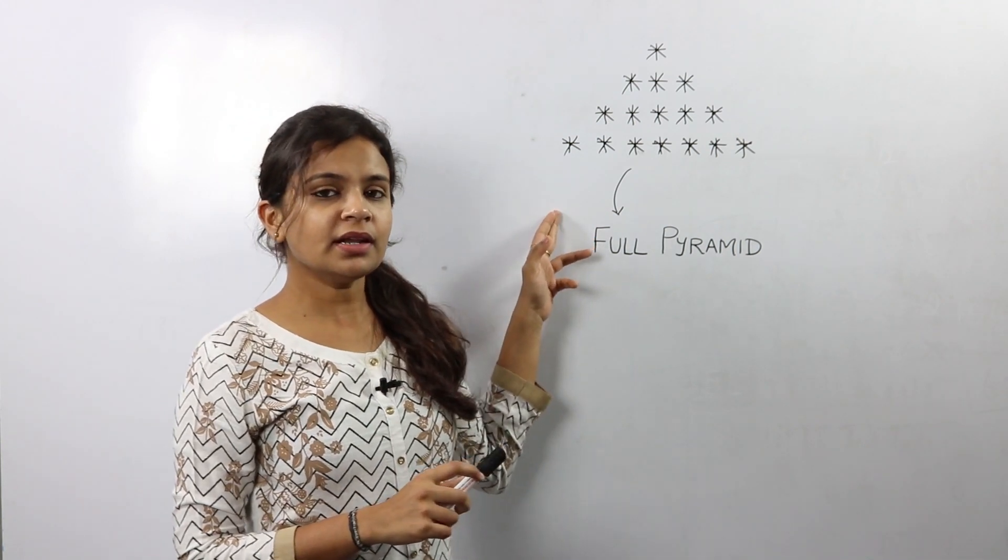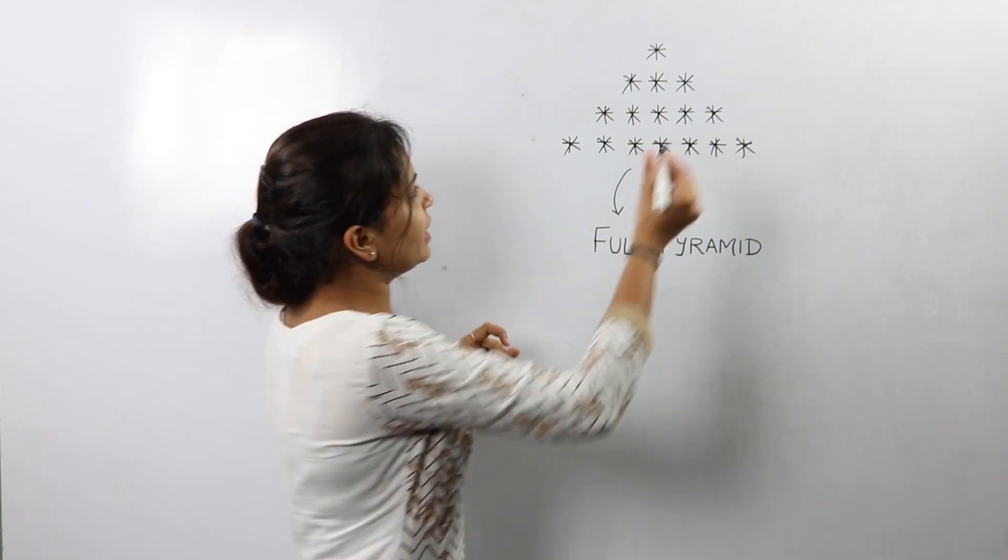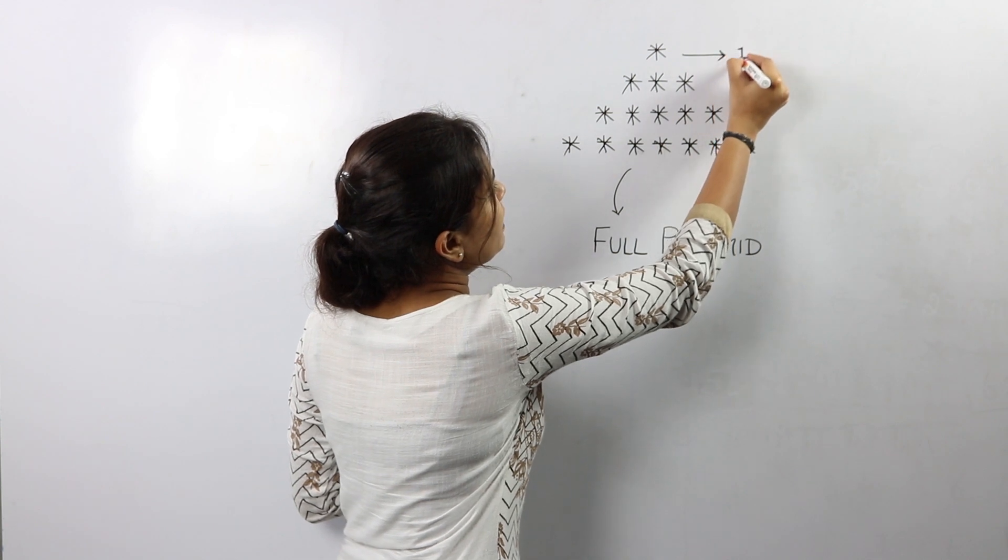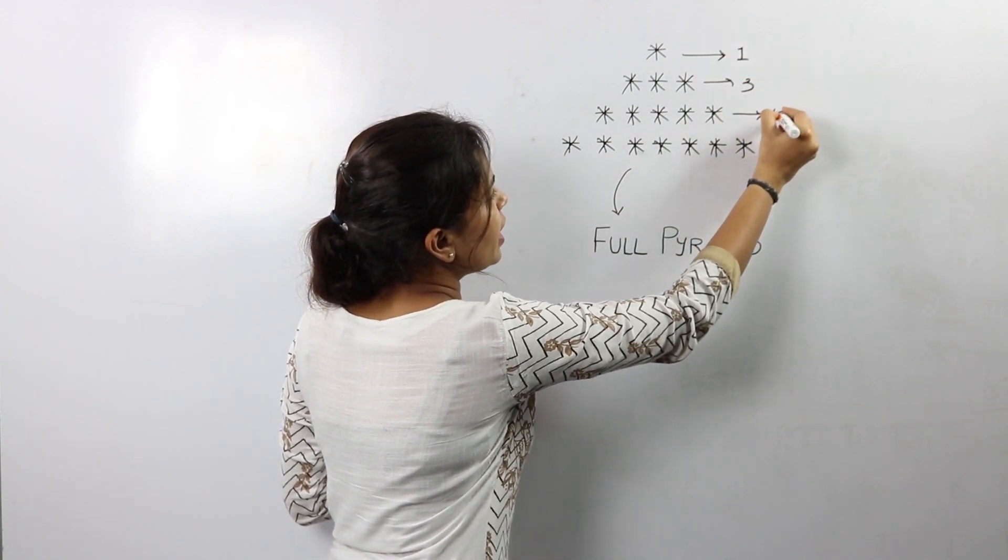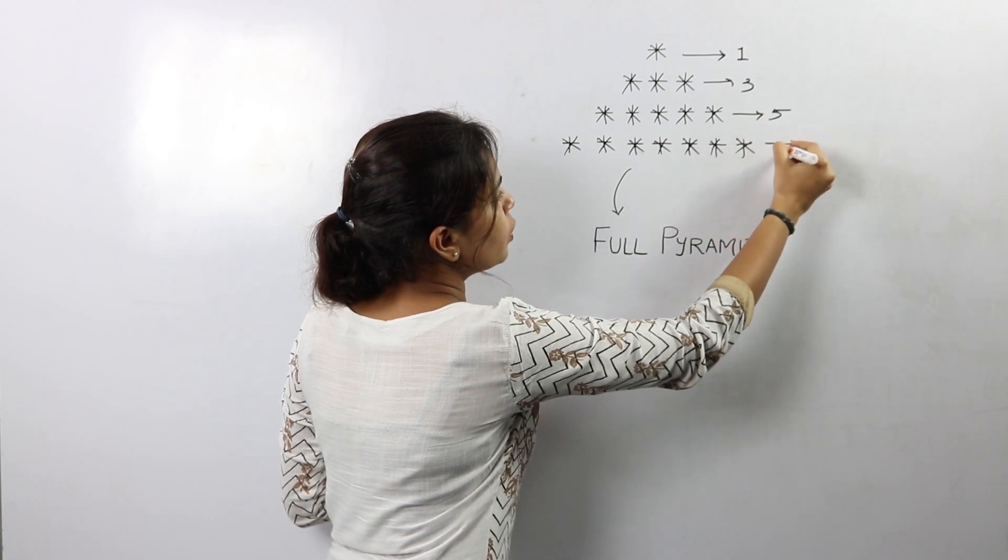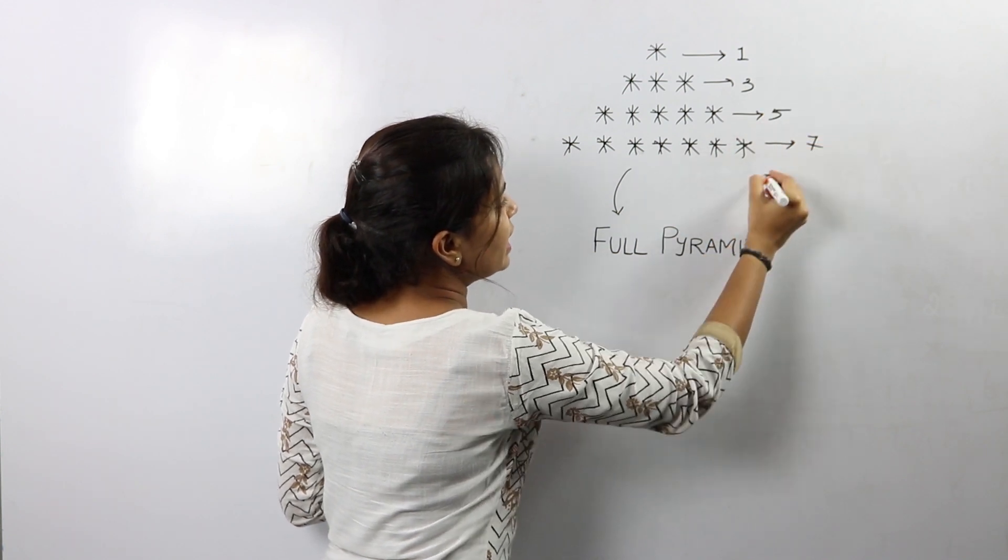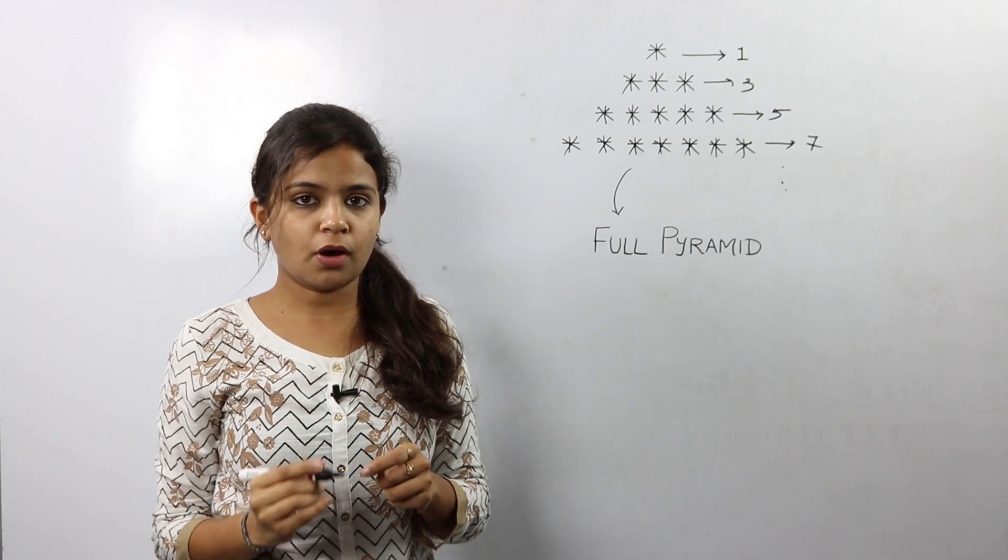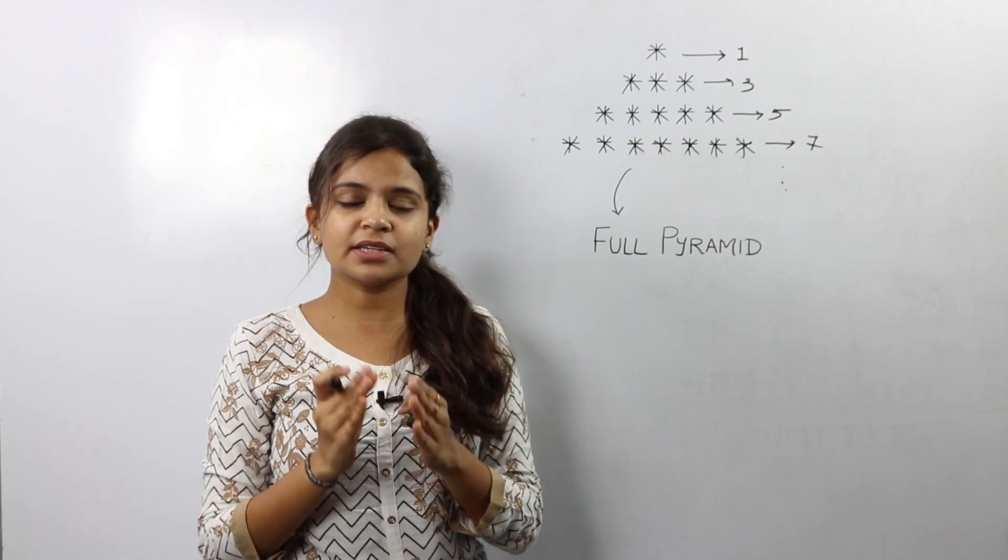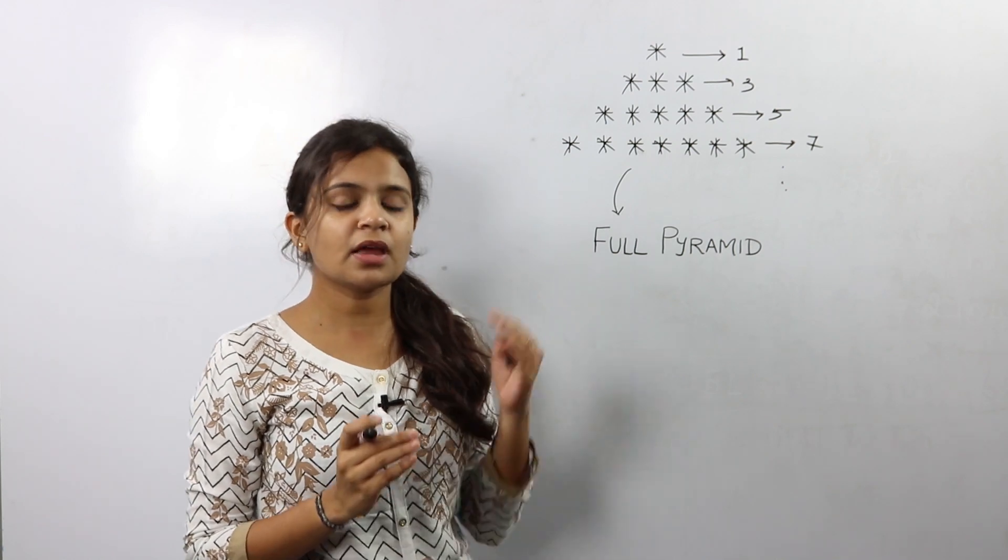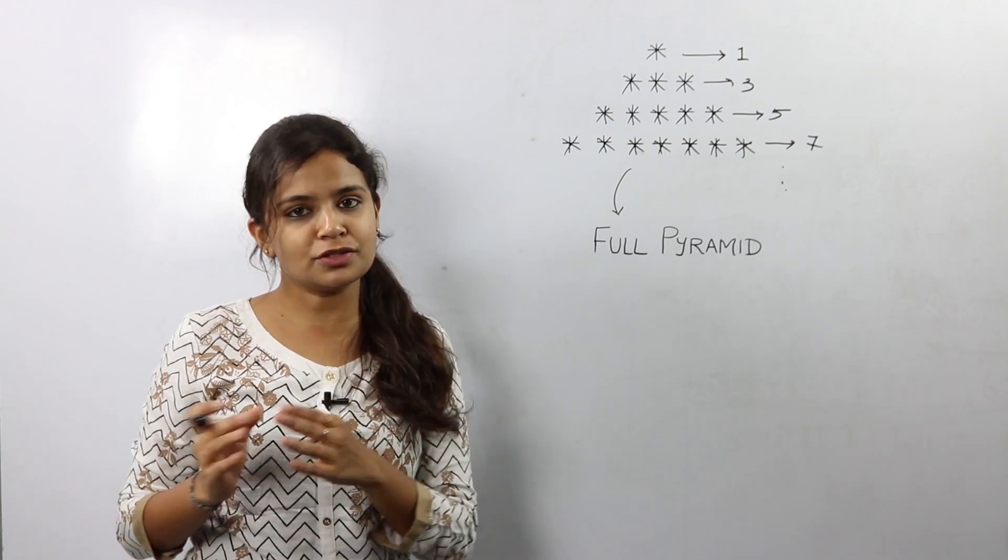If you observe this pattern, the first row has clearly one element, the second row has three elements, the third row has five elements, the fourth row has seven elements and so on. So this means in our pattern every row has consecutive odd number of elements: 1, 3, 5, 7 and so on.